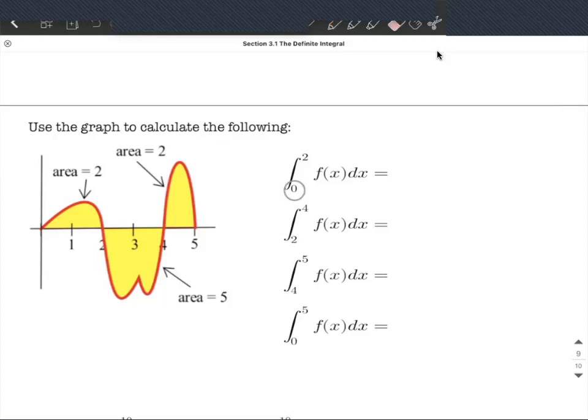We want to know the integral from 0 to 2 of f(x)dx, and this function name in red is f(x). For definite integrals, all it takes is adding together the areas. If they're above the x-axis, they're positive. If they're below the x-axis, they're negative. So between 0 and 2, we're just looking at this first bit right here, and it has an area of positive 2 because it's all above the x-axis.